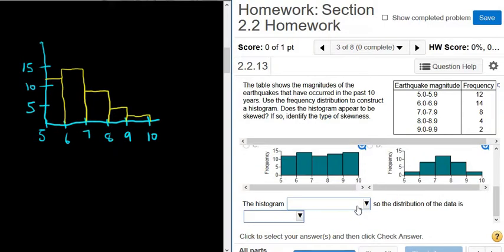The histogram is blank, so the distribution of the data is blank. So we have some choices here. Okay. So this is asking about skewness. Let me explain this.